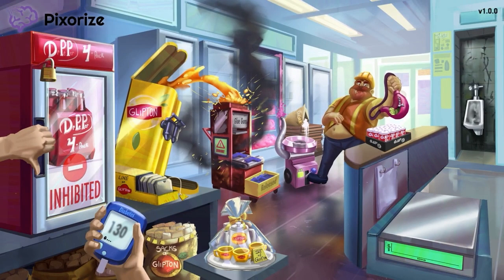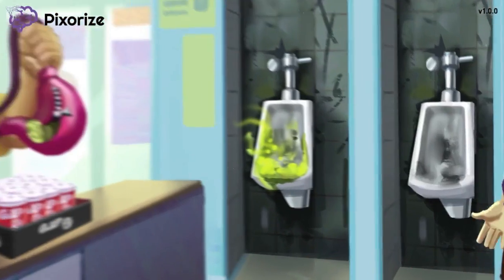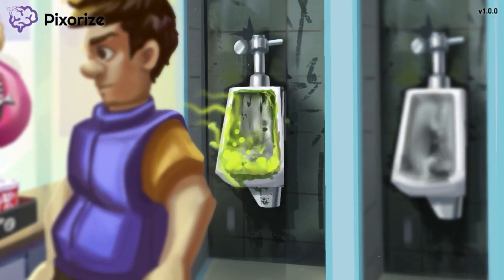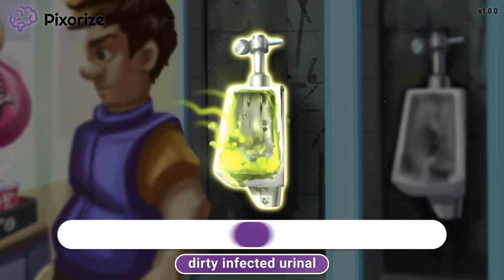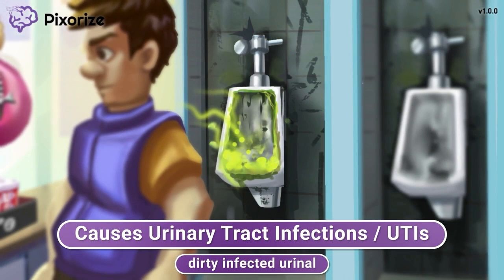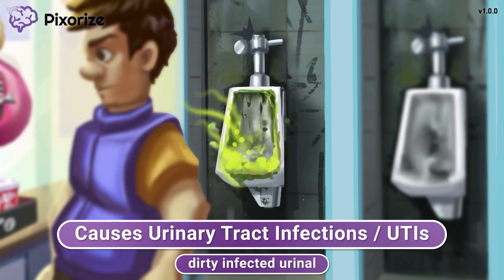Let's shift gears to talk about the side effects of these drugs, clustered towards the right side of the scene near the store's cashier. Notice how the cashier has just left the bathroom — the urinal looks really dirty and infected. This dirty, infected urinal represents urinary tract infections, or UTIs, a common side effect of taking DPP-4 inhibitors. While the mechanism is not well understood, DPP-4 inhibitors are known to cause mild suppression of the immune system, increasing the risk of developing a UTI.